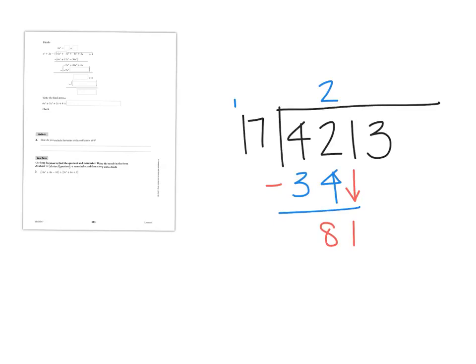How many times does 17 go into 81? 4 times. Let's check: 4 times 7 would be 28, carry the 2. 4 times 1 is 4, plus 2 is 6. 81 minus 68 is 13. What would have happened if instead of getting 13 I'd gotten something like 24? That would tell me I can take out another 17 — that 17 goes into it another time.